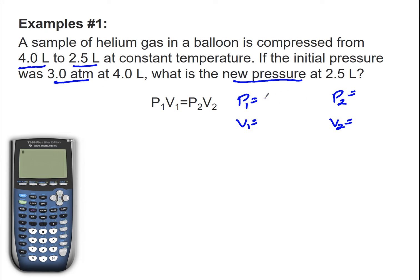So pressure 1 is going to be 3.0 atm. And volume 1, my initial volume, is 4 liters because that's what I'm starting out with. And I can see that it goes from 4 liters to 2.5 liters, so I'm going to put 2.5 liters as my V2. And my P2 is going to be my x that we're solving for.